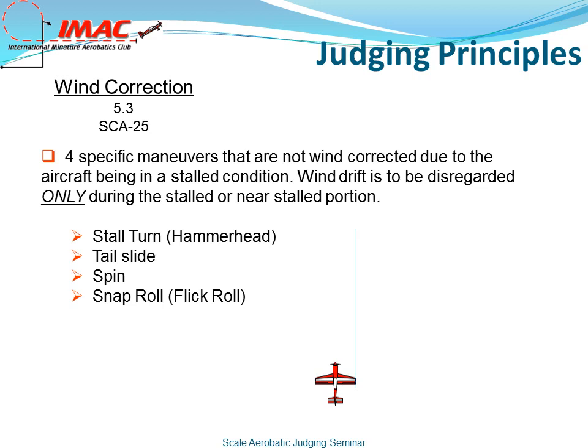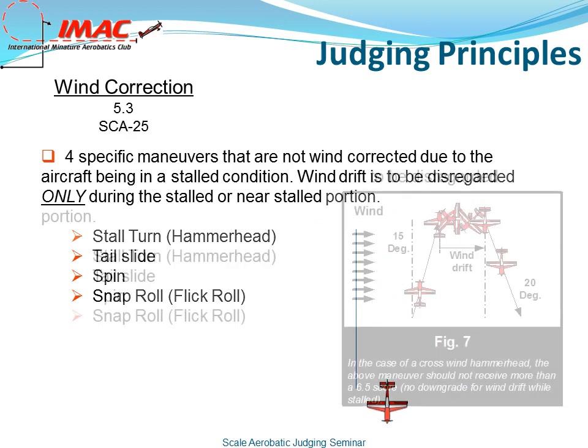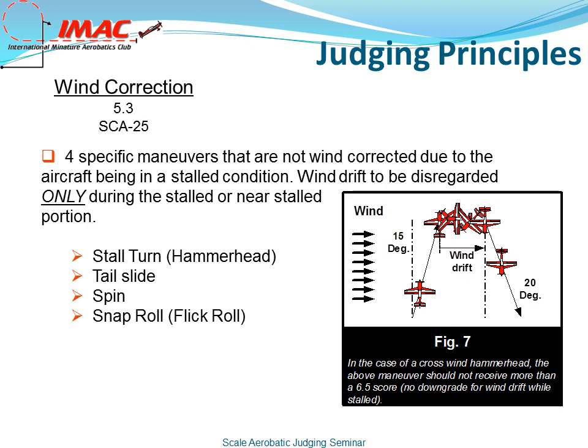There are four specific maneuvers that are not wind corrected due to the aircraft being in a stalled condition: stall turns or hammerheads, tail slides, spins, and snap rolls. Wind drift is to be disregarded only during the stalled or near-stalled portion. Take a look at figure 7 from your rule book, page 25. This example is a hammerhead turn in a crosswind. On the upline, a one-and-a-half-point deduction was taken because of a 15-degree drift. Wind drift during the stalled portion should not be deducted. The aircraft picked up a 20-degree downline drift, therefore the score would not be higher than a 6.5.